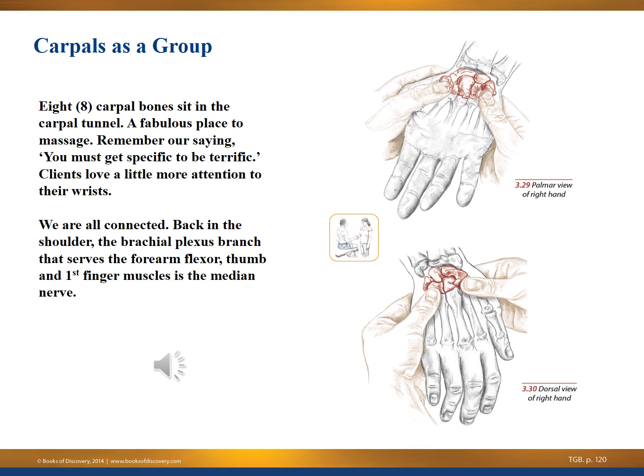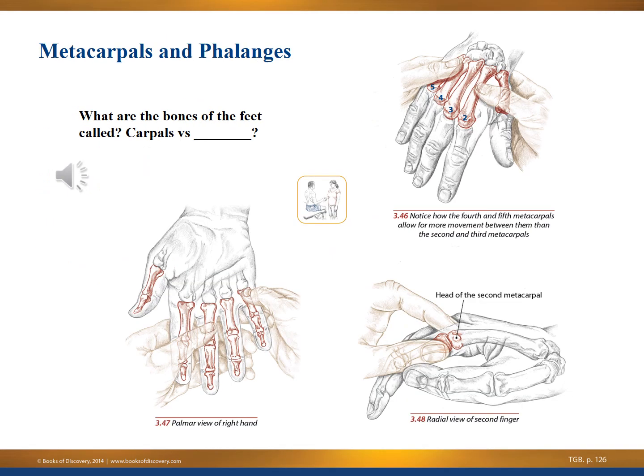Remember from the shoulder: the brachial plexus is the nerve bundle that runs through the shoulder. The brachial plexus branch that serves the forearm flexors, thumb, and first finger muscles is the median nerve — it runs straight through the carpal tunnel. Here we also see an image of the metacarpals and the phalanges.